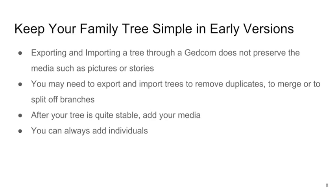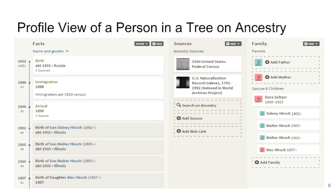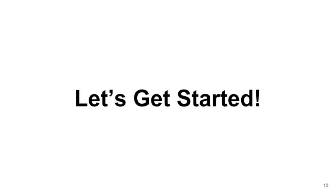Remember to keep your tree simple when you are searching. Get fancy later. One of the views you can have of an individual in Ancestry.com is the profile view. This is kind of the workshop for the individual in an Ancestry tree. When in doubt about how to do something, try the tools area. Now you have an idea of what a tree looks like and what it contains. Let's try making one.